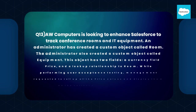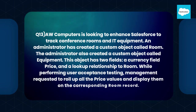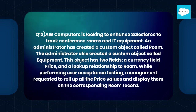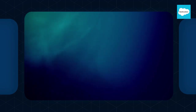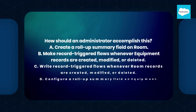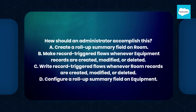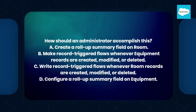Q13. AW Computers is looking to enhance Salesforce to track conference rooms and IT equipment. An administrator has created a custom object called Room and a custom object called Equipment. Equipment has two fields: a currency field Price and a lookup relationship to Room. Management requested to roll up all the price values and display them on the corresponding room record. How should an administrator accomplish this? A. Create a roll-up summary field on Room. B. Make record-triggered flows whenever equipment records are created, modified, or deleted. C. Write record-triggered flows whenever Room records are created, modified, or deleted. D. Configure a roll-up summary field on Equipment.